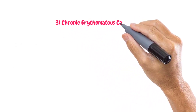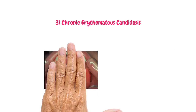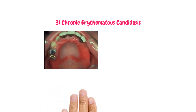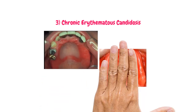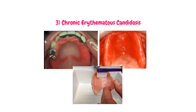Next, we have chronic erythematous candidosis, also known as denture stomatitis. You will notice erythematous areas on denture-bearing surfaces, typically under an upper acrylic denture, with margins corresponding to the periphery of the appliance worn. It is usually not painful and typically due to poor denture hygiene.